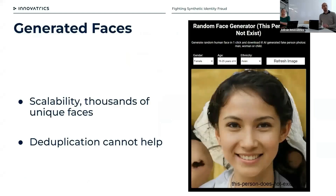It's much easier and cheaper to create hundreds and thousands of faces that do not exist using generative neural networks. With these faces, you can create new synthetic identities where the fraudster doesn't have to show his face. This makes the attack very scalable, and deduplication cannot help — it cannot identify these new synthetic identities, because obviously the faces are unique.